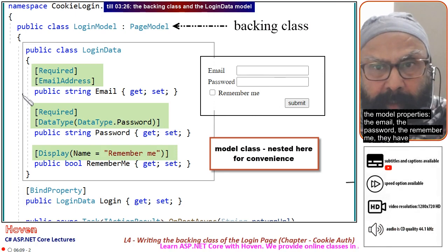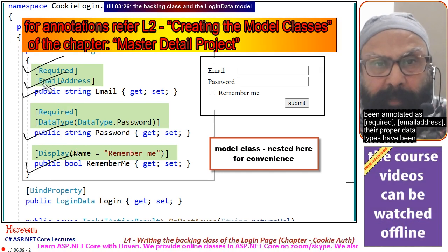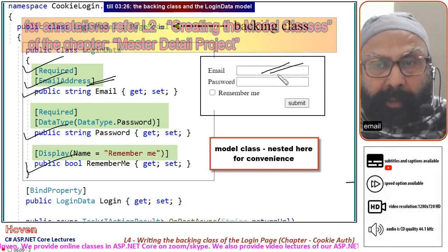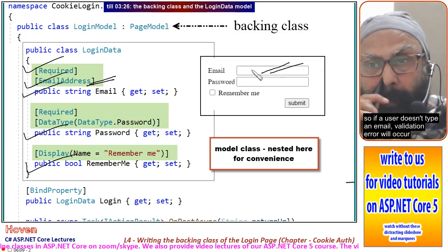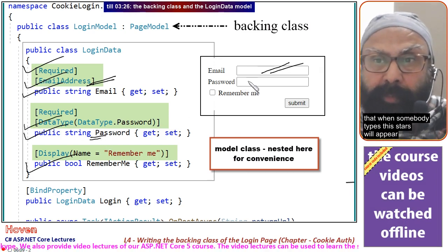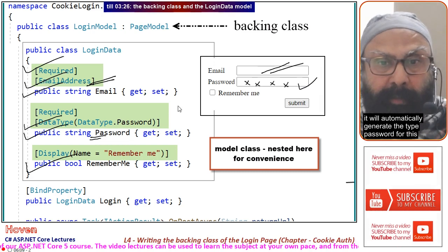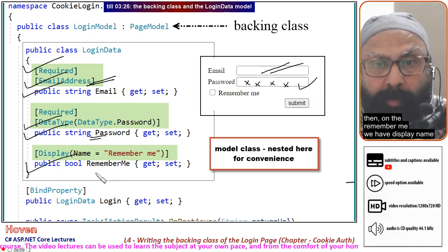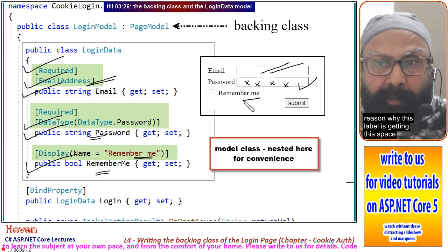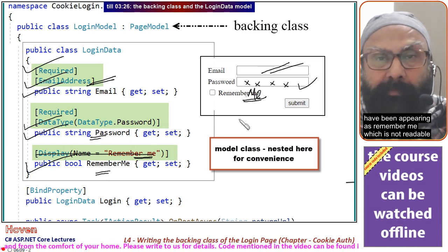The model properties — email, password, and remember me — have been annotated as required with proper data types. Email is annotated with DataType.EmailAddress, so if a user doesn't type an email, a validation error will occur. The data type for password is password, so stars will appear when typed — ASP.NET Core Razor will automatically generate type="password". For remember me, we have DisplayName set to "remember me" with a space, which is why the label shows that space.